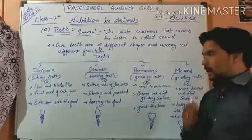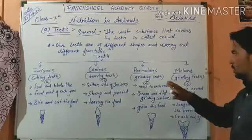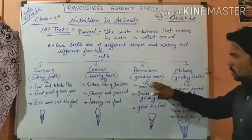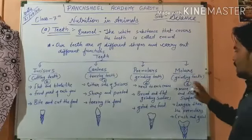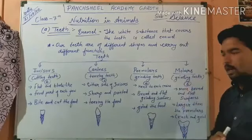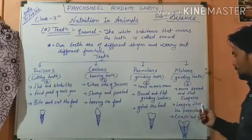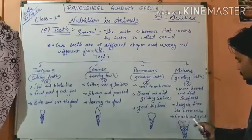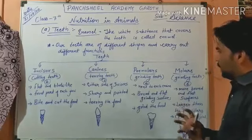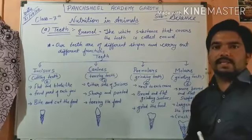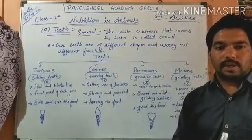Molars are also grinding teeth, but they are larger than premolars with a broader, flatter surface. They crush and grind food so that it is in very small pieces, and then our tongue can mix saliva into the food pieces for easier digestion.